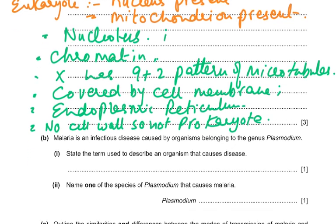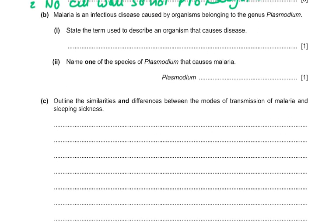Moving on: malaria is an infectious disease caused by organisms belonging to the genus Plasmodium. The question asks you to state the term used to describe an organism that causes disease. The answer is pathogen. The biggest mistake students made was calling it a parasite — that would get you zero marks.